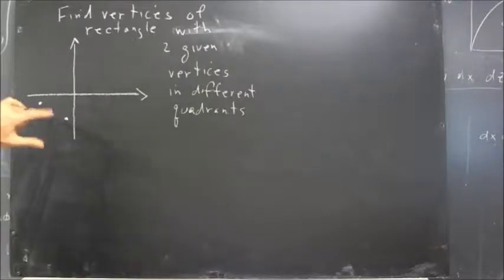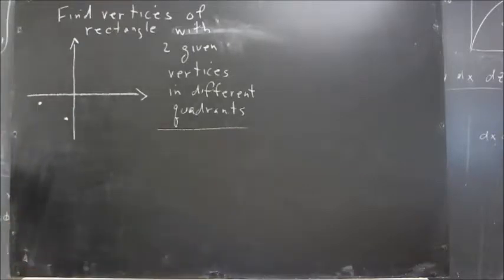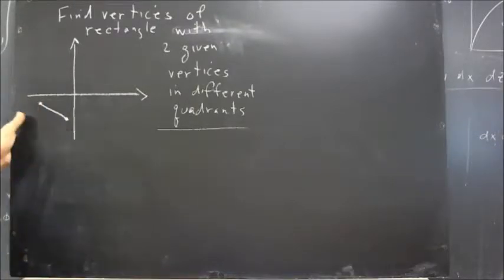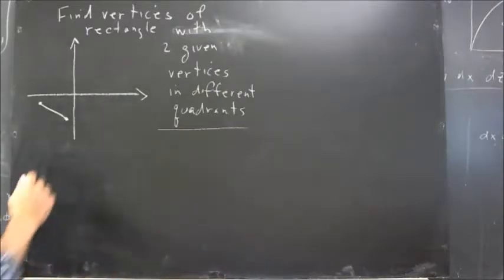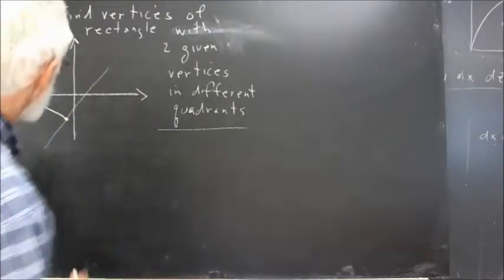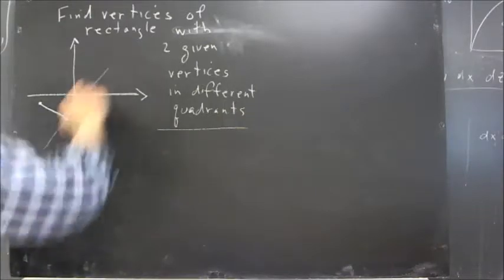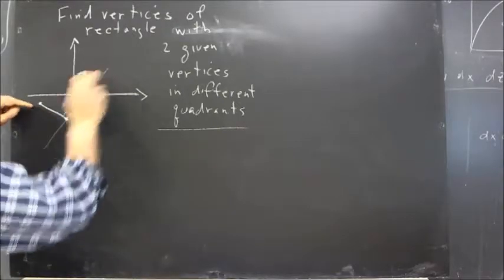So the new vertices can't be in the third quadrant, and they can't be in the same quadrant. Let's consider what we mean by a rectangle having these vertices. If you have these vertices, then you have this side. Now, if you have this side, you're going to have to have two sides perpendicular to this side — otherwise you wouldn't have a rectangle.